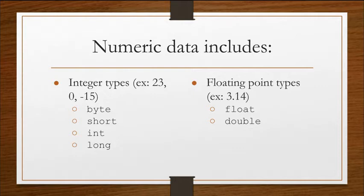Under the integer type, there are four data types in Java that you can use for integers: byte, short, int, and long. And the two floating point types in Java are float and double.